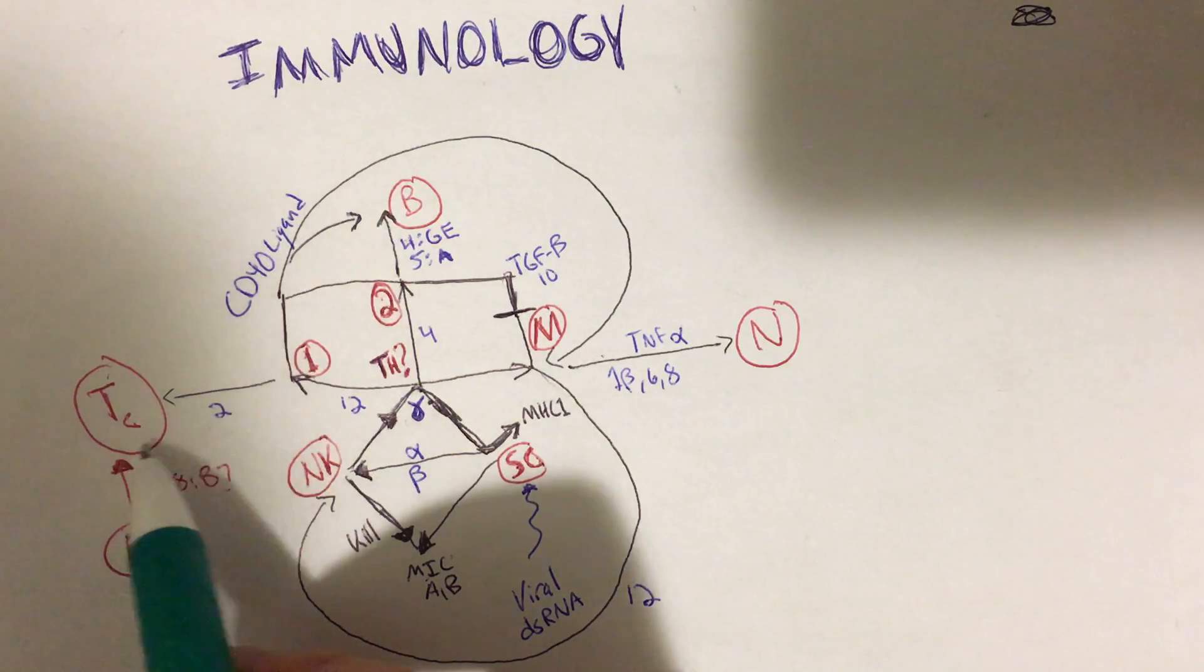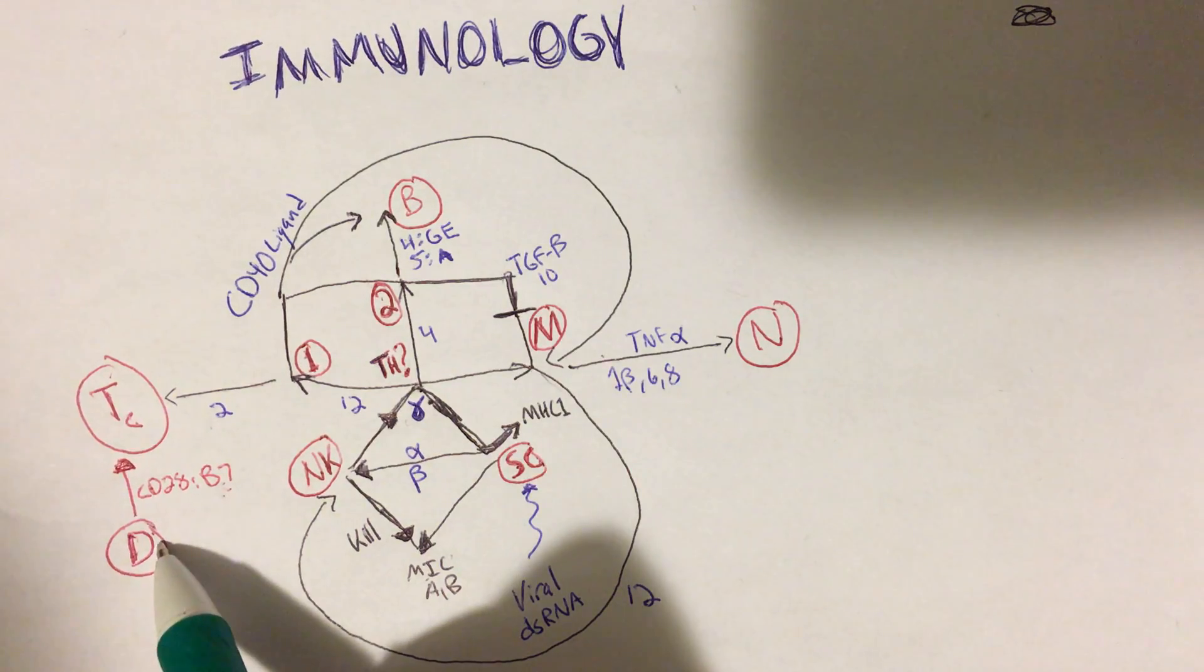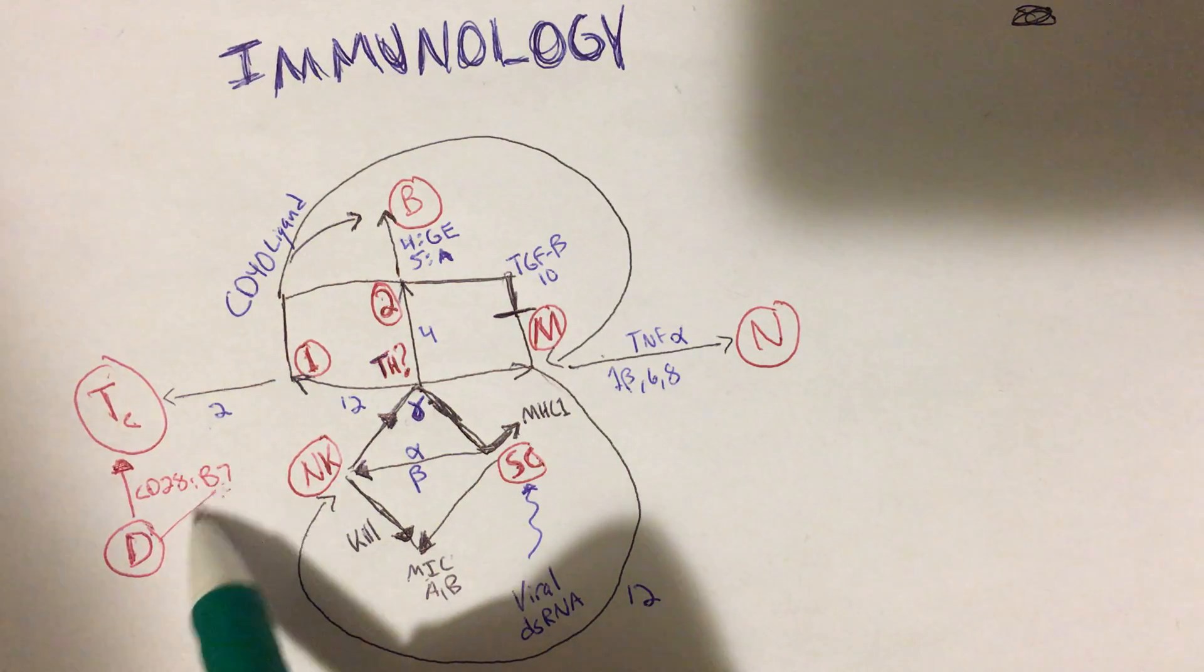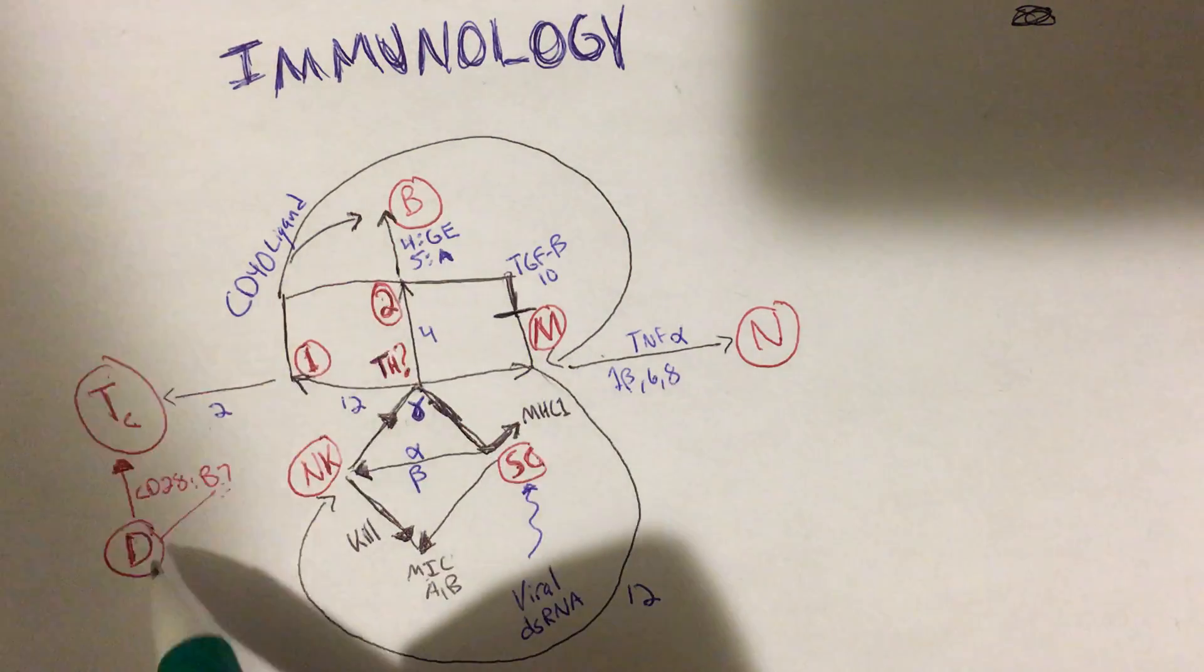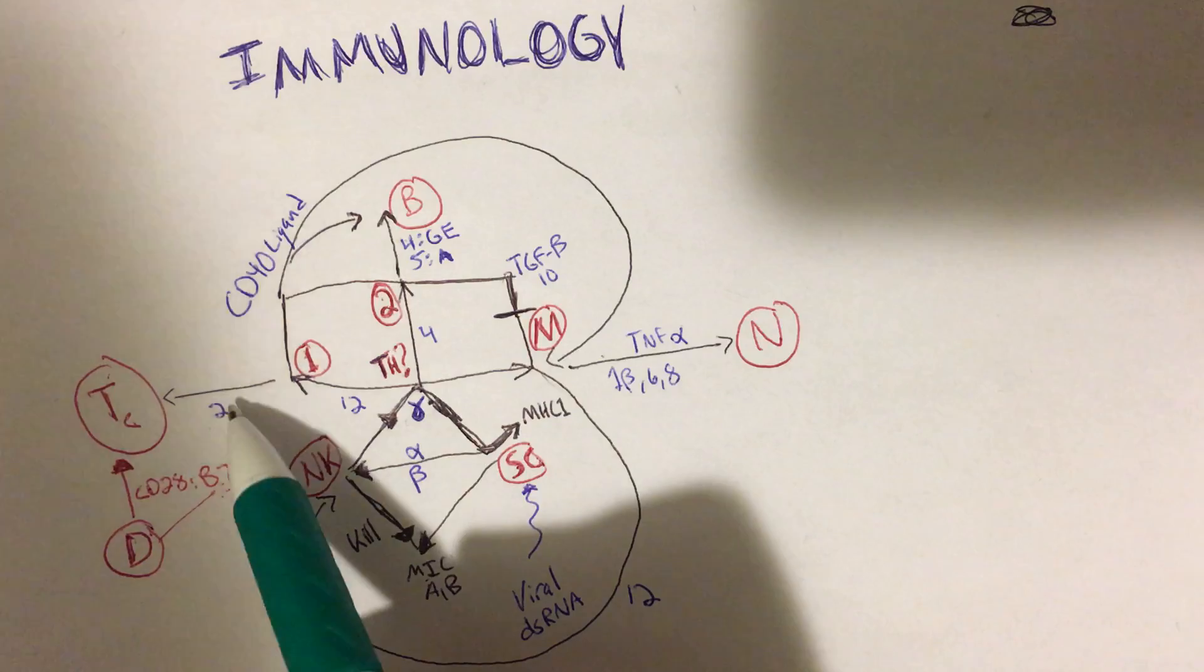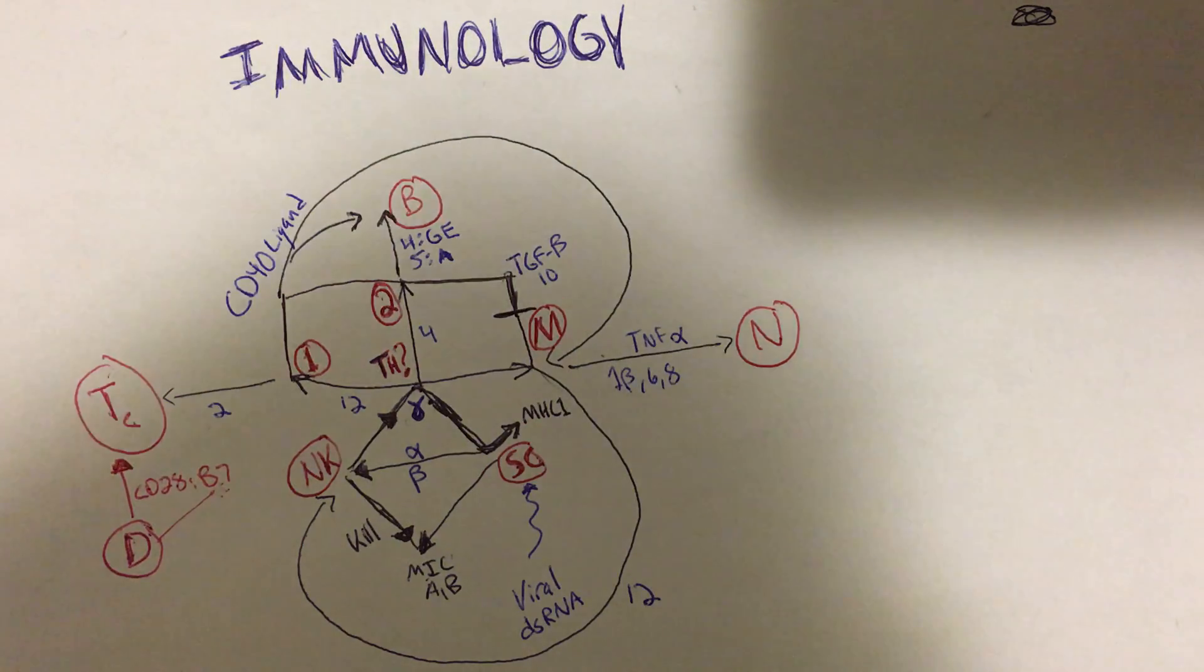And it can do so - it can actually have these T cells proliferate without IL-2. And in fact, any antigen presenting cell can do this. Like dendritic cells have this B7 here, but so do B cells and so do macrophages. But this just reminds me, you know, that this is different - it doesn't require IL-2.